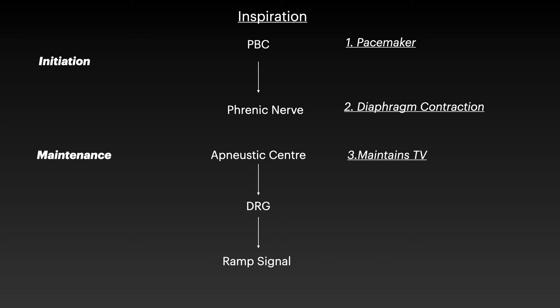Once the tidal volume of 500 ml is reached, it needs to be maintained. This maintenance is done by the apneustic center, which stimulates the dorsal respiratory group (DRG). The DRG has a special signaling pathway — it produces a ramp signal, which is a gradual increase followed by a gradual pause. This ramp signal sustains inspiration and maintains it at the tidal volume of 500 ml.